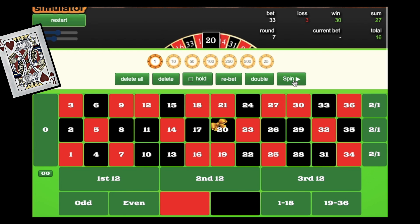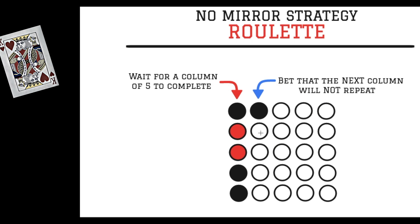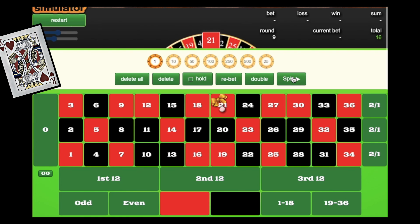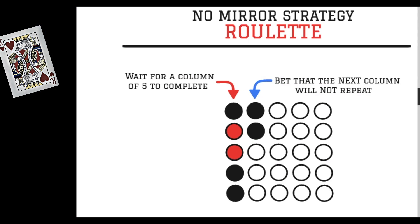We win because black hit. After a hit, we wait for the column to complete, so we take three more free spins. Spin one: black. Spin two: red. Spin three: red. So the column went black, red, red.